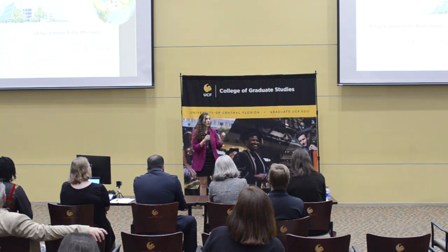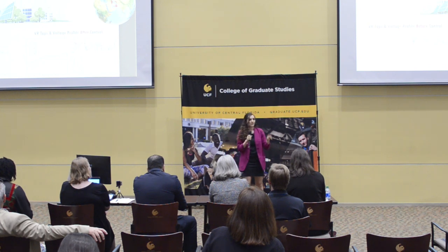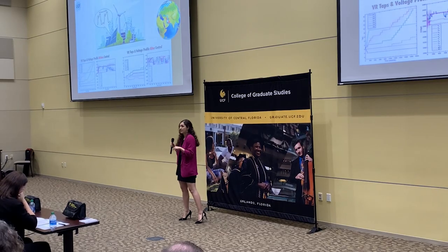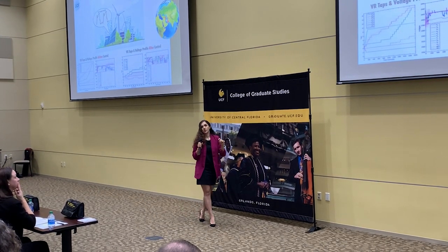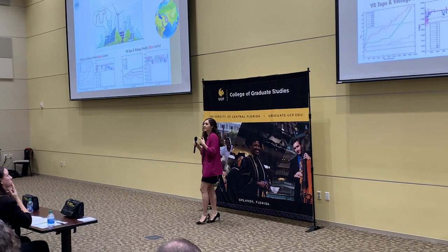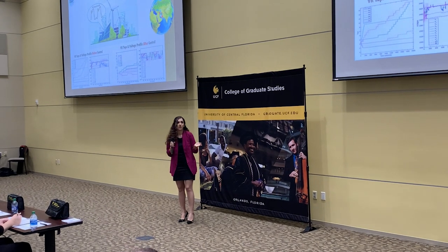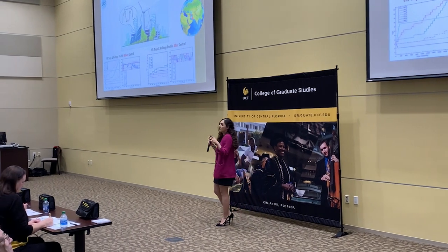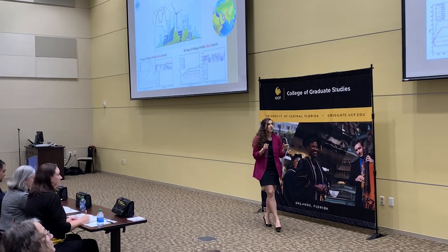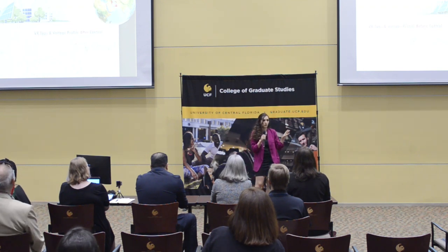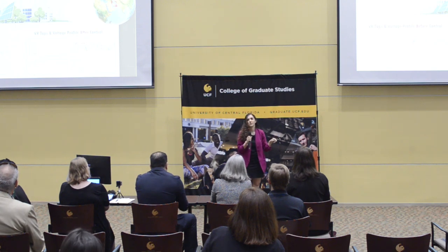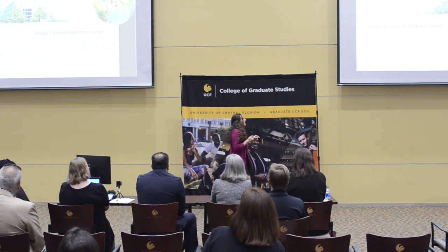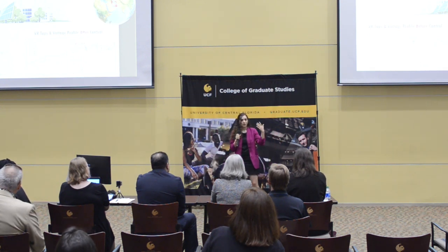This control method can determine the number of taps for voltage regulators and capacitors. It can determine which voltage regulators or capacitors should act first, and also it can determine the reactive power generation for each DG. We have implemented this control method on several test systems and got significant results. As you can see on the slide, after we apply our control, we have a unified voltage profile, which means we keep the voltage inside a specific threshold, and we also minimize the number of taps for the voltage regulators and capacitors, which extends the life expectancy of these devices.